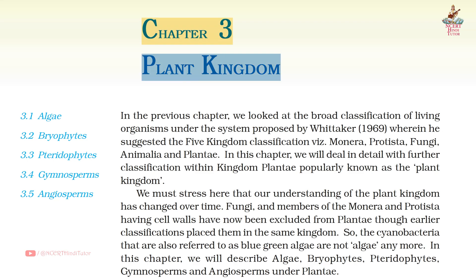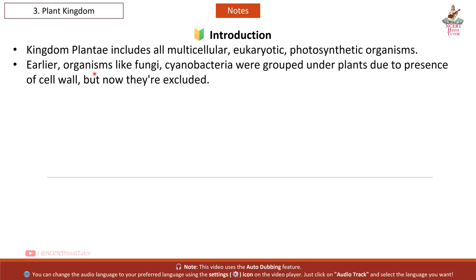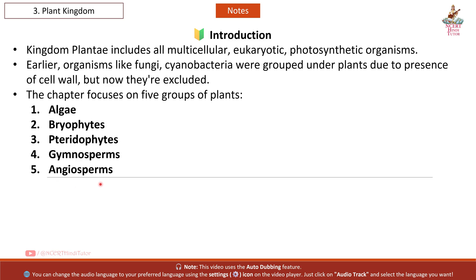Chapter 3: Plant Kingdom - Short Notes from Class XI Biology. Introduction: Kingdom Plantae includes all multicellular eukaryotic photosynthetic organisms. Earlier, organisms like fungi and cyanobacteria were grouped under plants due to the presence of cell walls, but now they are excluded. The chapter focuses on 5 groups of plants: algae, bryophytes, pteridophytes, gymnosperms, and angiosperms.